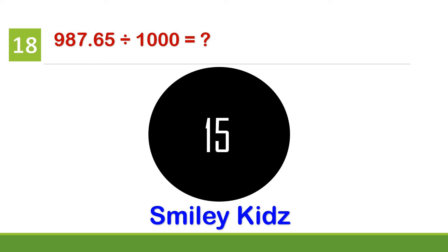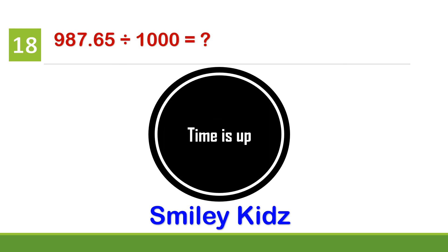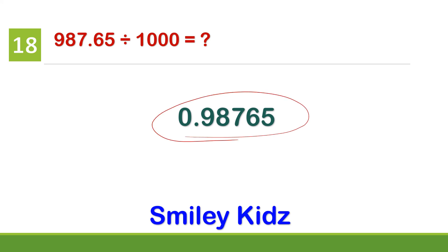Question number 18. 987.65 divided by 1,000 is? Your time starts now. Your time is up. The correct answer is 0.98765. When we divide any number by 10, 100, 1000 or 10,000, the decimal point moves to the left. There are three zeros, so we move the decimal point three digits to the left, giving 0.98765.